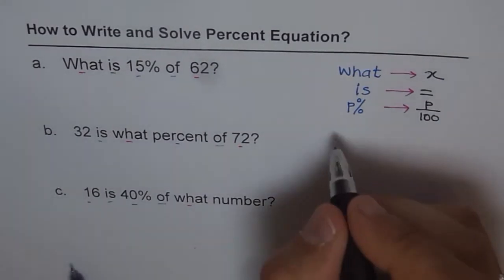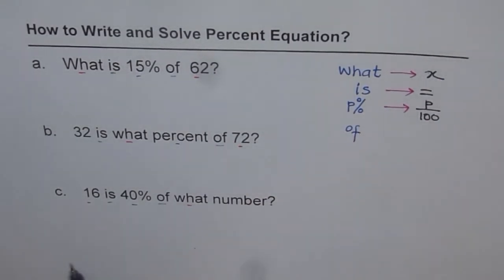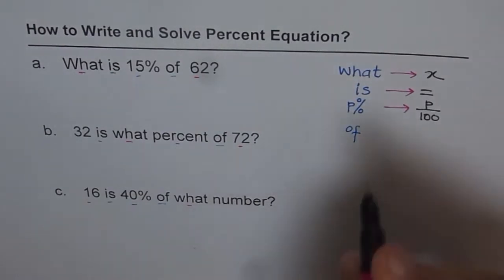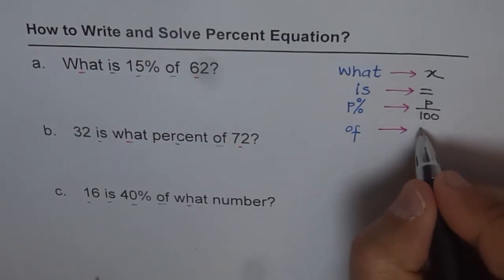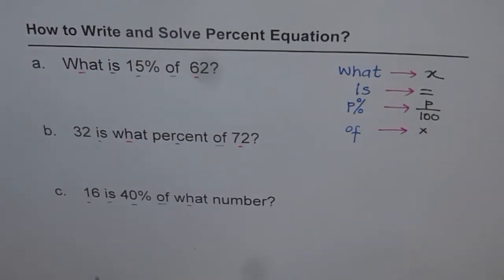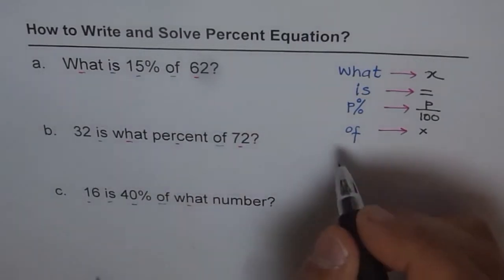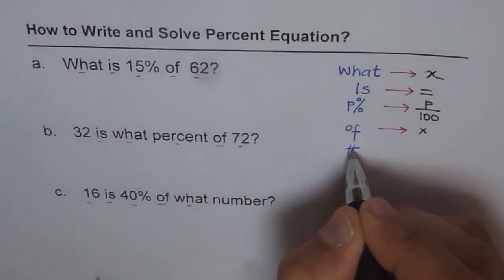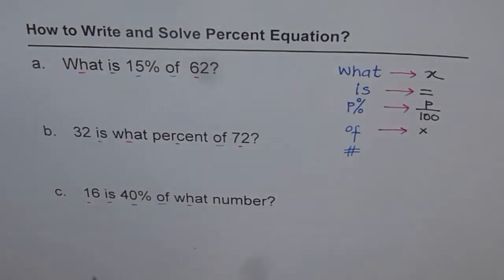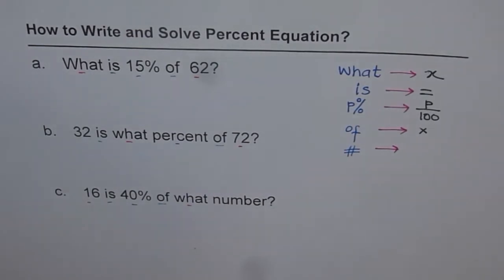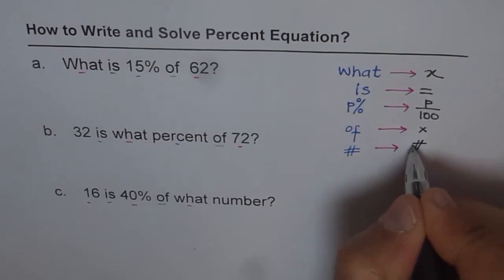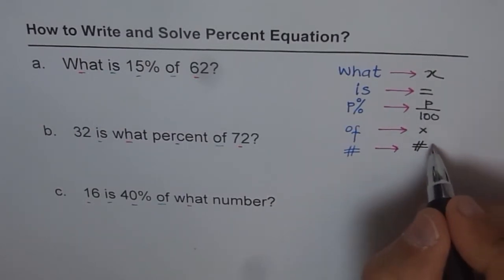Now whenever I say 'of', off means multiplication for us. So whenever we are trying to say of, we just multiply it. Off means multiplication. And then we have numbers. Let me just use this symbol for number. Numbers are same in each and every language. If I write 2, you understand it as 2 in every language. So that is my symbol for numbers.